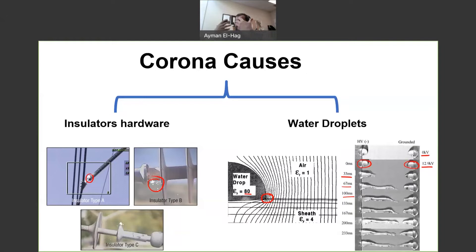So Corona can also initiate dryband arcing, or by itself without the evolution from Corona to dryband arcing, they also have a damaging effect on the surface of the material. And this is way before any development of any measured level of leakage current.